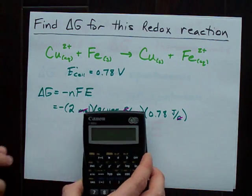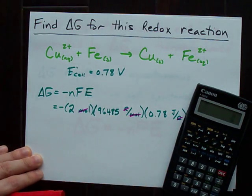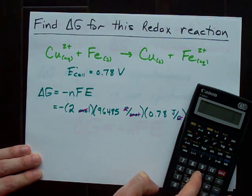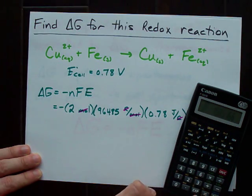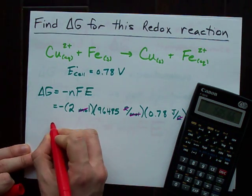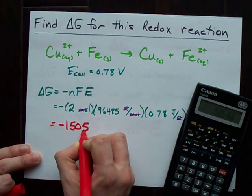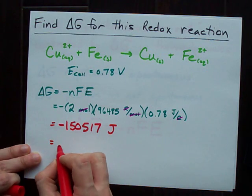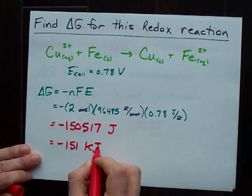So, all I need is my little calculator. Two times 96,485 times 0.78, and I make it negative, which means negative 150,517 joules. Or really, basically negative 151 kilojoules.